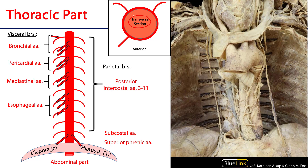It's quite simplistic, but my point in including it is so that we can see that the parietal branches of the thoracic aorta generally leave posterolaterally, whereas the visceral branches, while not all in the same plane, are going to assume more of an anterolateral departure from the thoracic part.